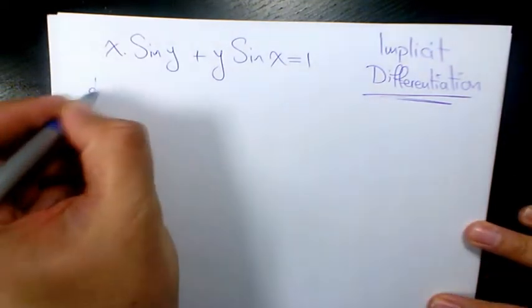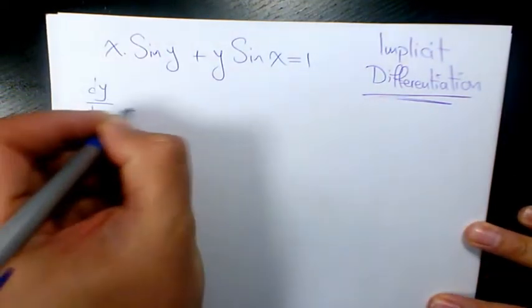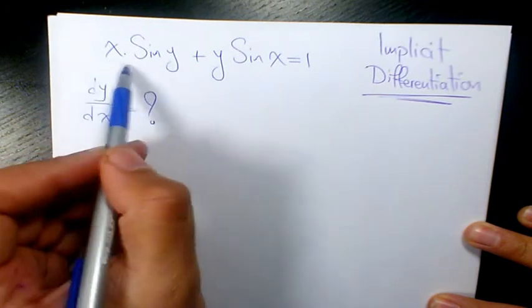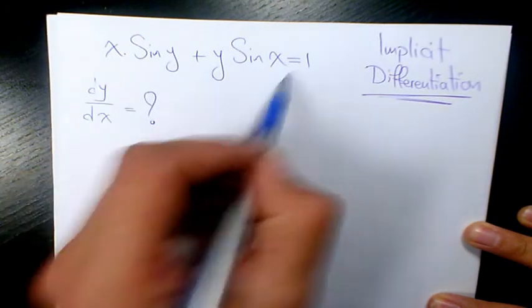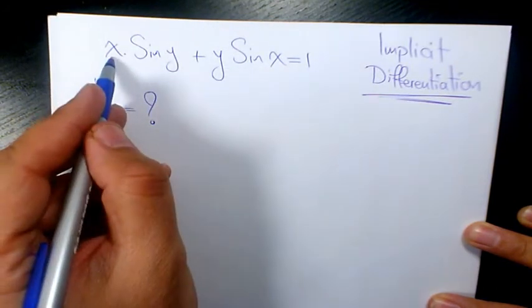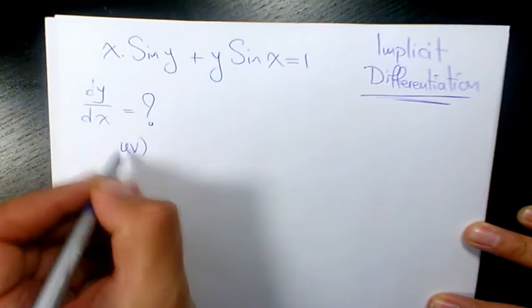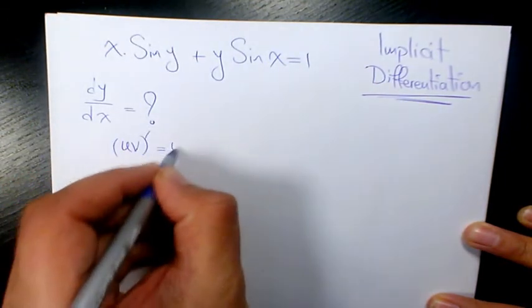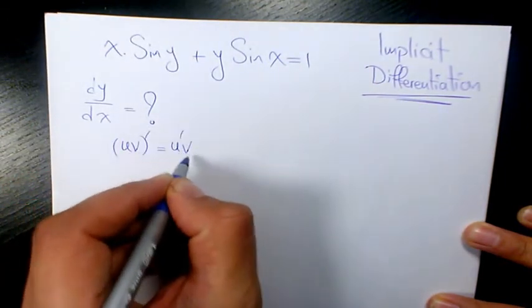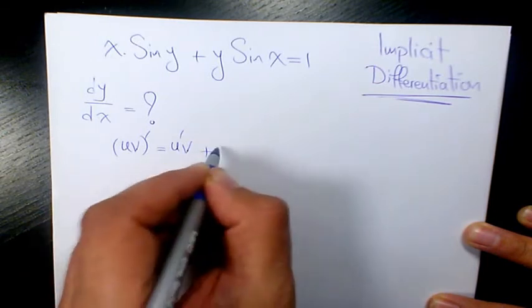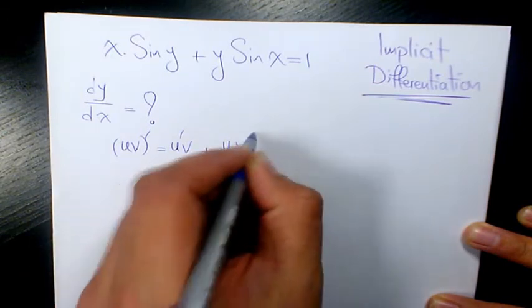So what we need to do is use implicit differentiation. We use the product rule here and product rule here. The product rule is when you have uv, it equals the derivative of u times v plus u times the derivative of v.